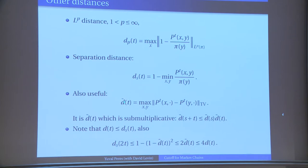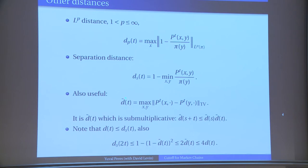Finally, something very close to total variation distance is d-bar, which is the total variation distance between distributions starting at two different states — it measures how much we forget the initial state. d-bar is very close to d: d-bar is at least d, but at most twice d. Both of these follow from the triangle inequality. If I take the average of P^t(y, ·) over y with weights pi(y), by stationarity I get pi. So from convexity of the norm, d-bar is at least d.